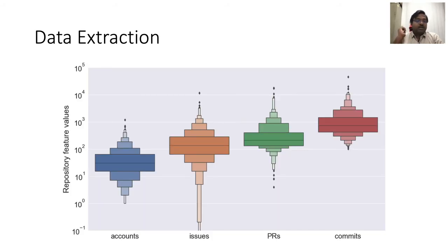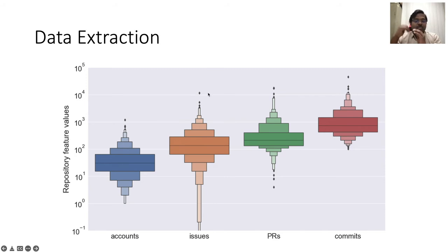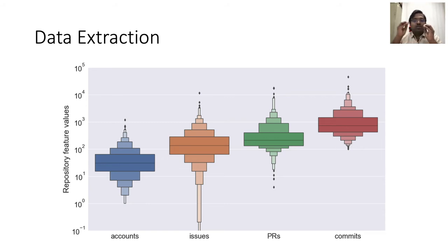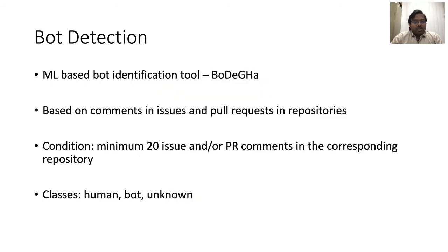Before going into bot-specific details, let me walk through the distribution of the data. The y-axis is on a logarithmic scale. For example, for issues, the maximum value is on the order of 10^4, the minimum is 0, and the median is near 100. This shows the distribution is concentrated at lower levels — many repositories have around 100 issues, pull requests, and commits, with fewer having more than 1,000.